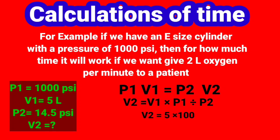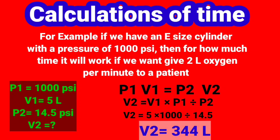Now put the values and calculate it. V2 is equal to 5 multiply by 1000 divide by 14.5. Calculate it. You will find the answer, 344 liters. Now it is easy to calculate the duration of time.